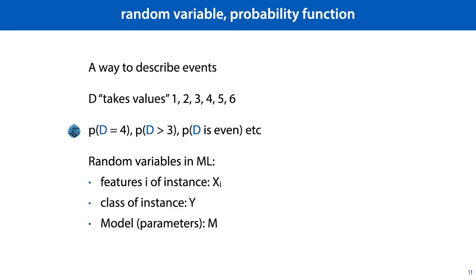Random variables are a way to describe events. Their definition is confusing and a little convoluted, so we'll just give you an intuitive interpretation. We can think of a random variable d as something that takes the values in the sample space. We can then use this random variable d to describe events, such as d equals 4, d larger than 3, or d is even. We can then assign a probability to each event with a probability function p. This function takes as its input an event and produces as its output a value between 0 and 1. In machine learning, it's common to model features, target labels, and sometimes even model parameters as random variables. If we are referring to a dataset of multiple instances, we model each of these as a separate random variable, but drawn from the same distribution.